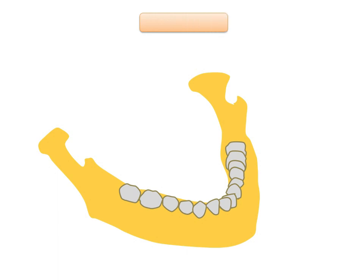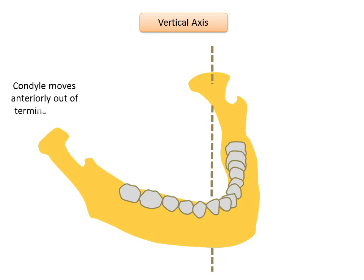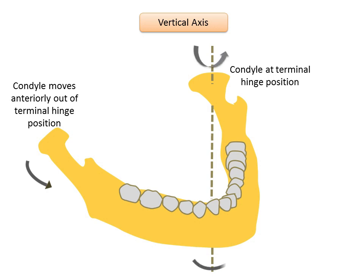The vertical axis runs through the condyle and the posterior border of the ramus of the mandible. The mandible rotates around this vertical axis during lateral movements. Mandibular movement around the vertical axis, which is the frontal axis, occurs when one condyle moves anteriorly out of terminal hinge position while the vertical axis of the opposite condyle remains in the terminal hinge position.